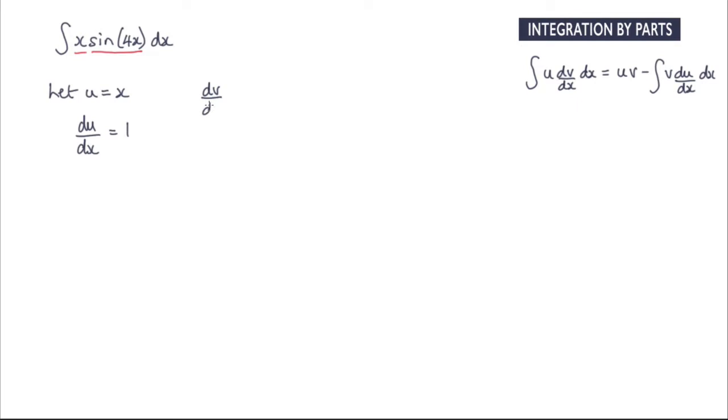Then dv by dx will equal sin of 4x. Now when we integrate that to get v, that will be negative 1 quarter cos of 4x.